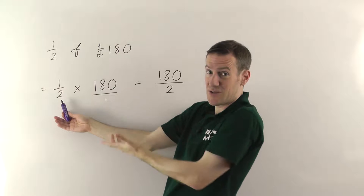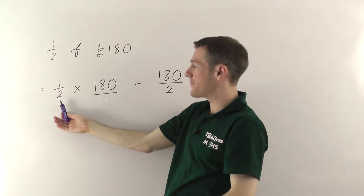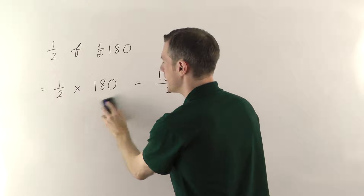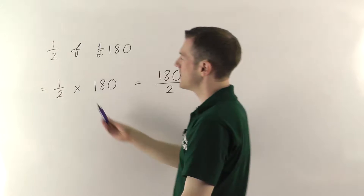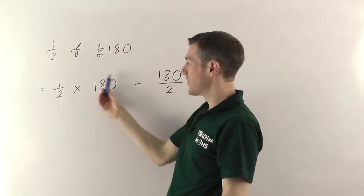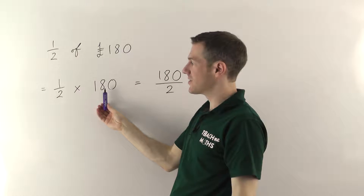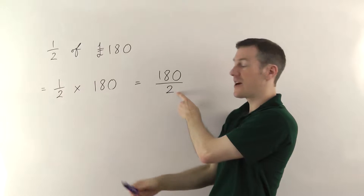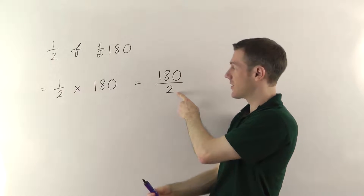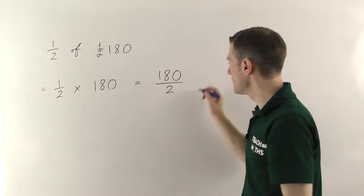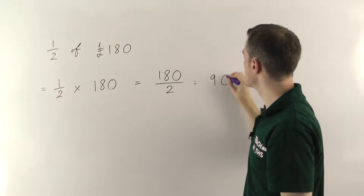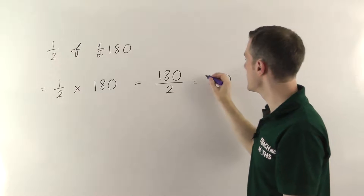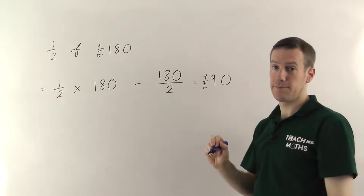When you're timesing by a whole number it's always going to stay the same, so we don't bother writing the divide by 1. The point is: you just multiply the amount you're dealing with by the top of the fraction, and then divide by the bottom of the fraction. 180 divided by 2 gives you 90. So half of 180 pounds is 90 pounds.